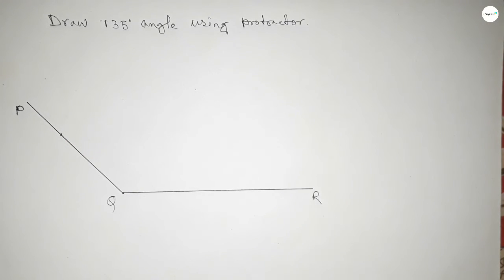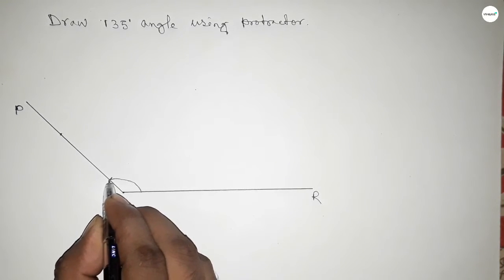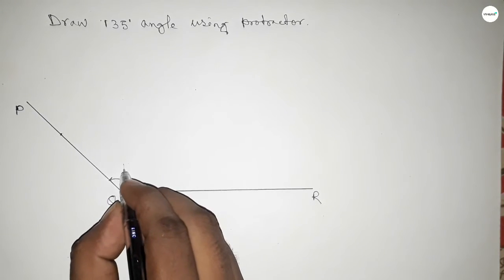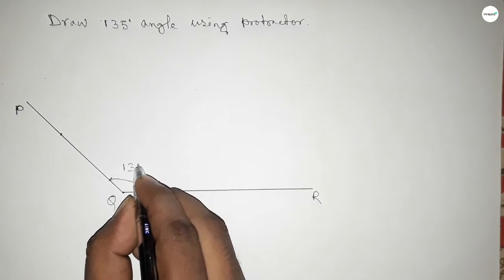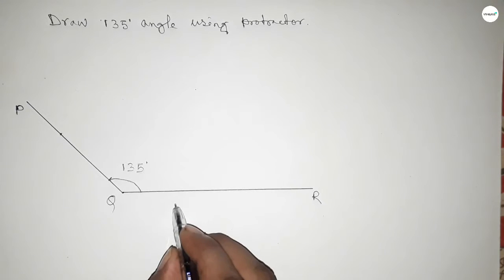P, Q, and R. So angle PQR equals 135 degrees.